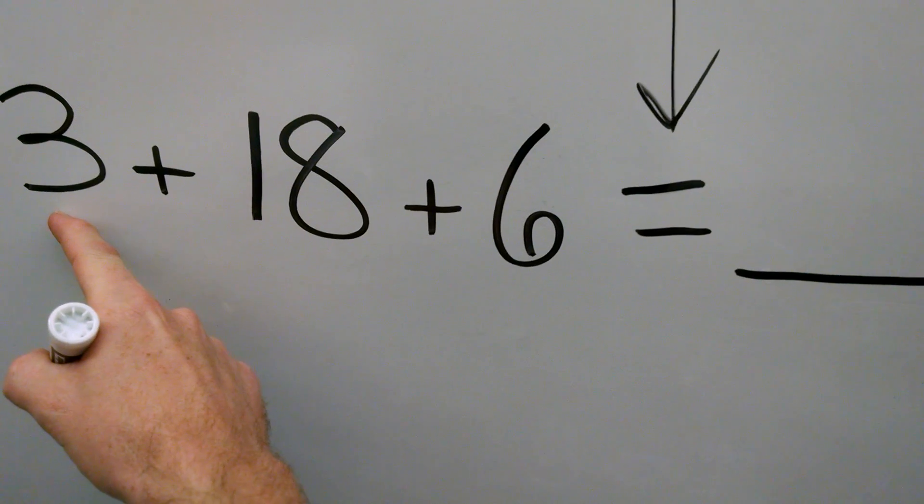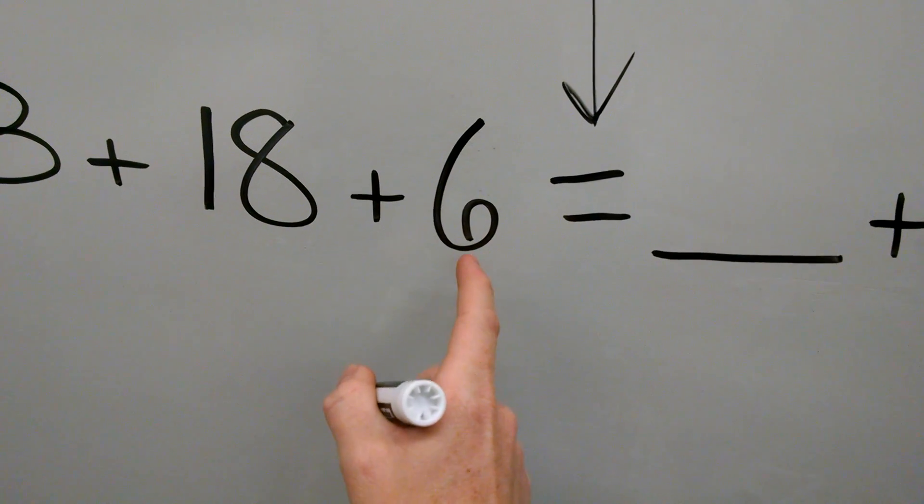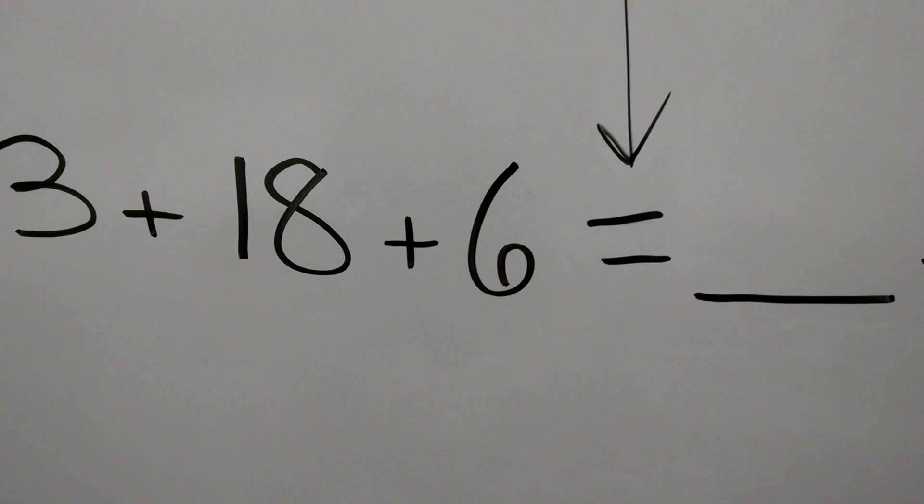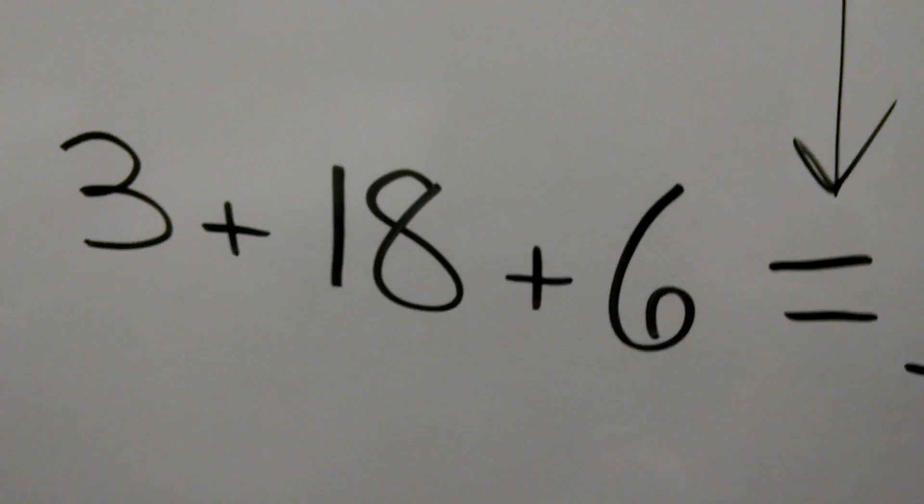So we can add 3 plus 18 plus 6, or we can add the 6 and the 3 and then the 18. It doesn't really matter what order you do it in, whatever's easier.